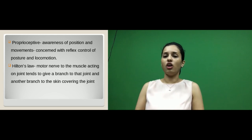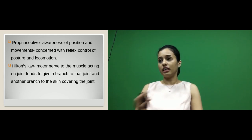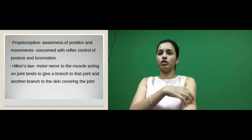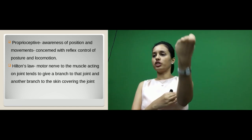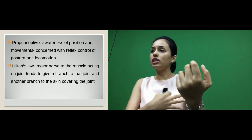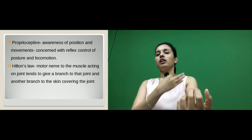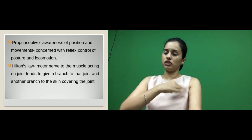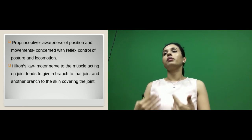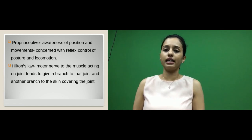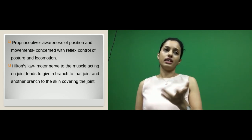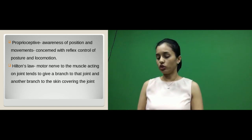There is a law called Hilton's law in relation to the nerve supply of the joint. Whatever motor nerves supply the muscles acting on a joint, they usually give a branch to that joint where the muscles are acting. The motor nerve to the muscle acting on the joint also gives a branch to that particular joint and another branch to the skin covering the joint. This is called Hilton's law and it applies to all joints throughout the body.